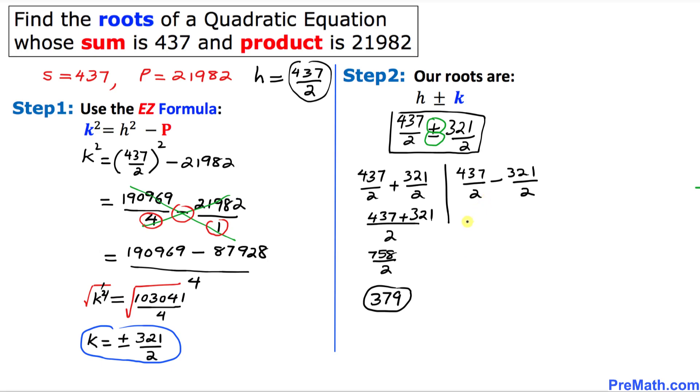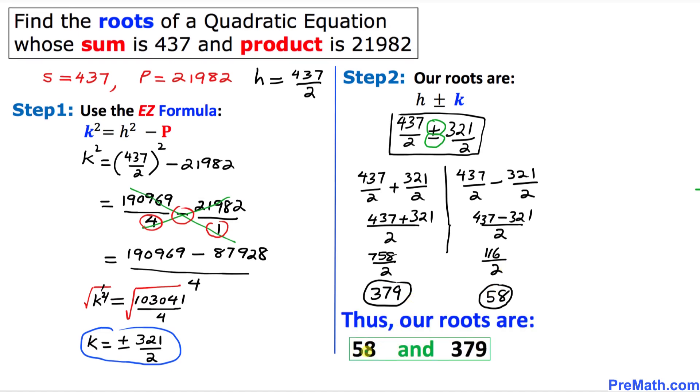Let's do the same thing on the right hand side. Once again the common denominator is 2, 437 minus 321. This time it's going to be 116 divided by 2. That is going to be 58, another number.